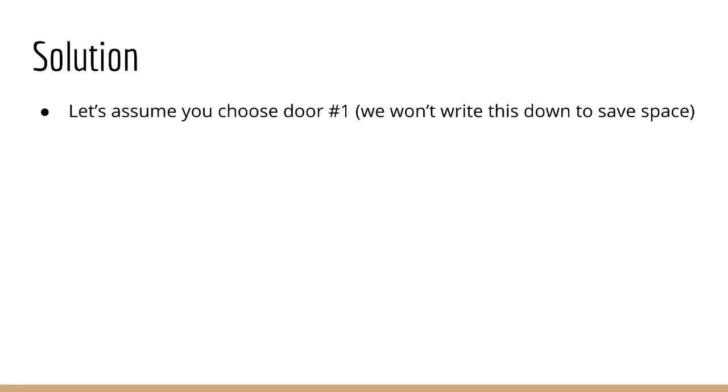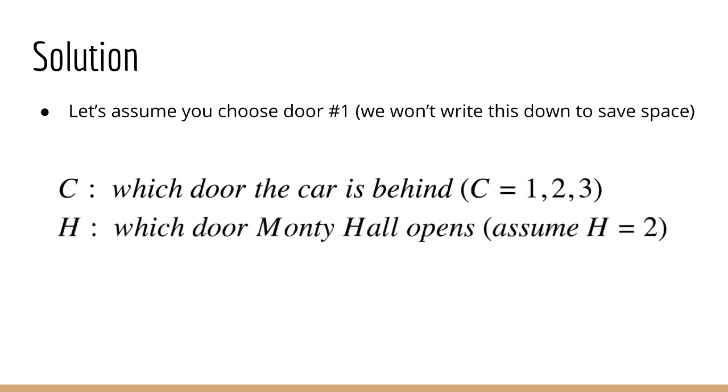Okay, so in this formulation, we are going to assume you chose door number one to begin with, as we stated earlier. So that's a given, you can write it out if you want, but it would appear in every expression so I'm not going to show it at all. Now let's say the random variable C represents where the car is. C equals 1 means the car is behind door number one, and C equals 2 means the car is behind door number two, and C equals 3 means the car is behind door number three. Let's let the random variable H represent which door Monty Hall opens. Remember that in our setup, Monty Hall opens door number two without loss of generality. It doesn't really matter which we use since the problem is symmetric, so let's just assume two.